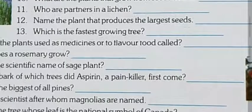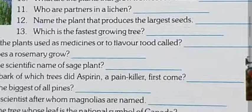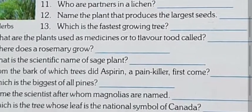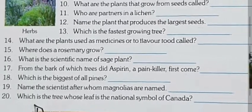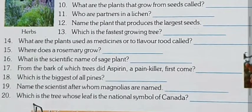Question number thirteen: which is the fastest growing tree? The answer is Albizia falcata — A-L-B-I-Z-I-A F-A-L-C-A-T-A.